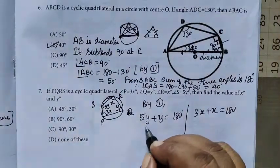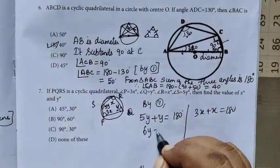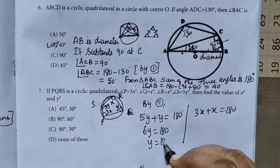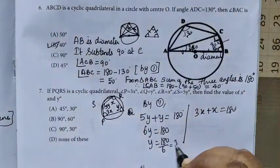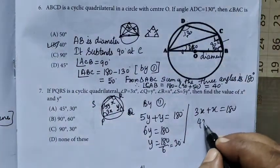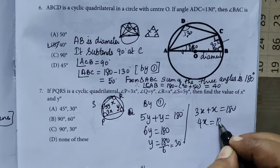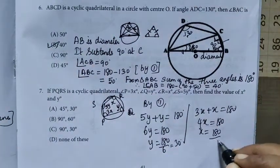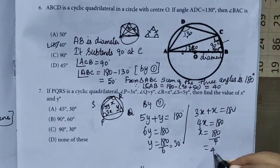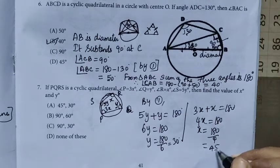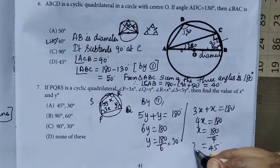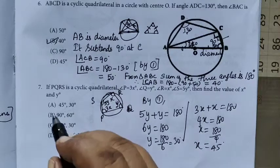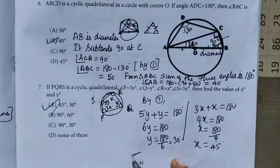So 6Y equals 180, therefore Y equals 180 by 6, which is 30 degrees. Then 4X equals 180, therefore X equals 180 by 4, which is 45. So X equals 45 and Y equals 30. Option 1 is the correct one. Thank you.